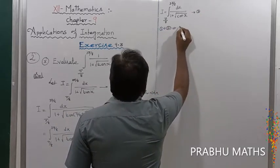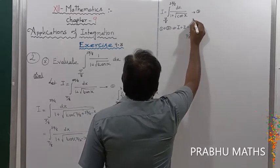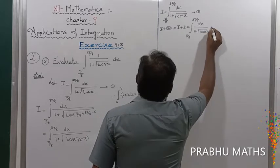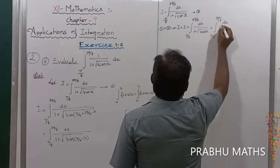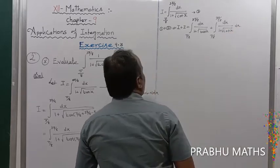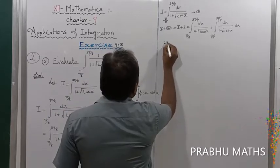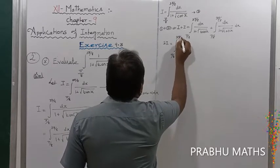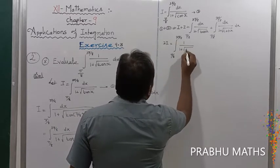Adding equation 1 plus equation 2: I plus I equals integral from π/8 to 3π/8 of dx divided by 1 plus root of tan x, plus integral from π/8 to 3π/8 of dx divided by 1 plus root of cot x. So 2I equals the combined integral from π/8 to 3π/8 of 1/(1 + √tan x) plus 1/(1 + √cot x), into dx.